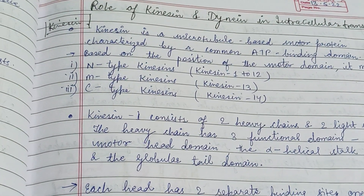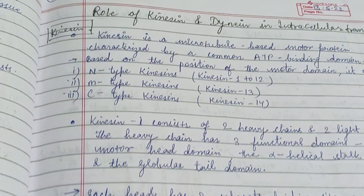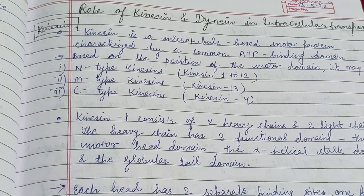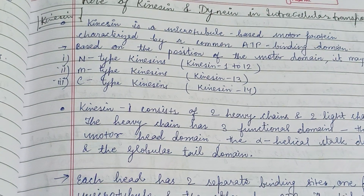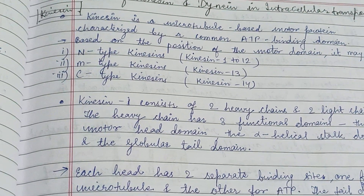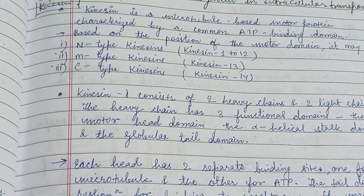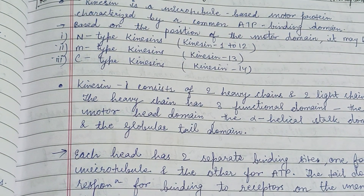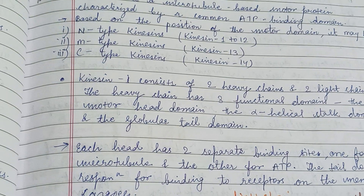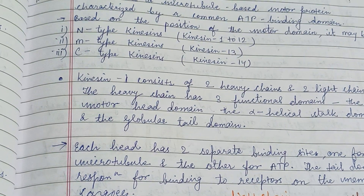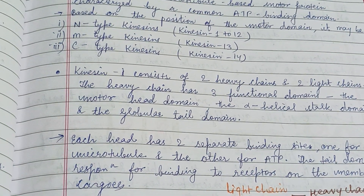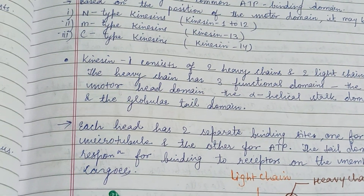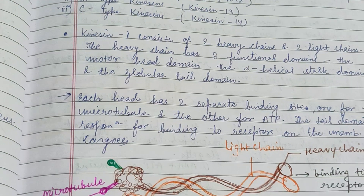This video carries a short description about the role of kinesin and dynein in intracellular transport. Kinesin is a microtubule-based motor protein characterized by a common ATP binding domain. Based on the position of the motor domain, it may be the N type, M type, or C type.